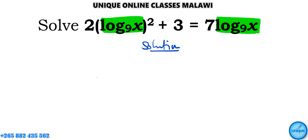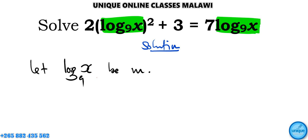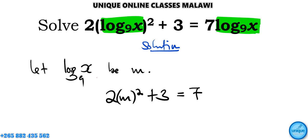I've suggested that we should let log base 9 of x be equal to m. So substituting that into the equation, we get 2m squared plus 3 is equal to 7m.